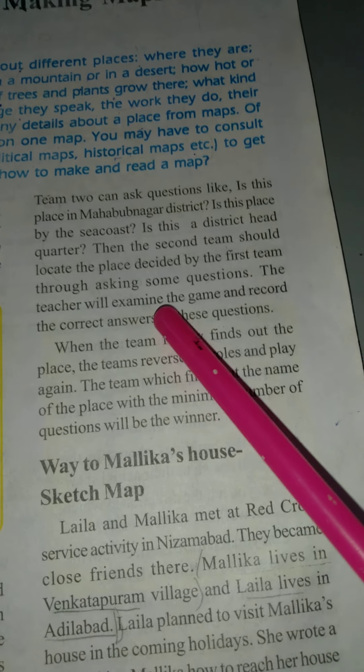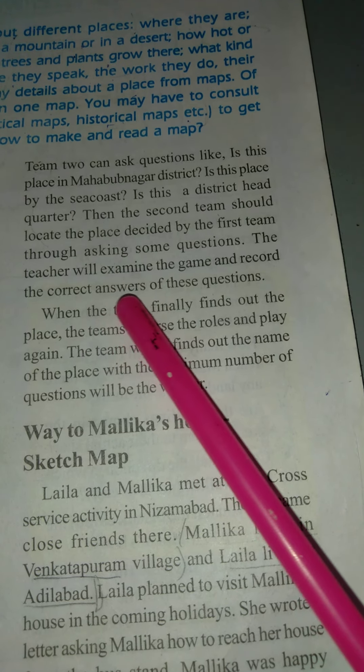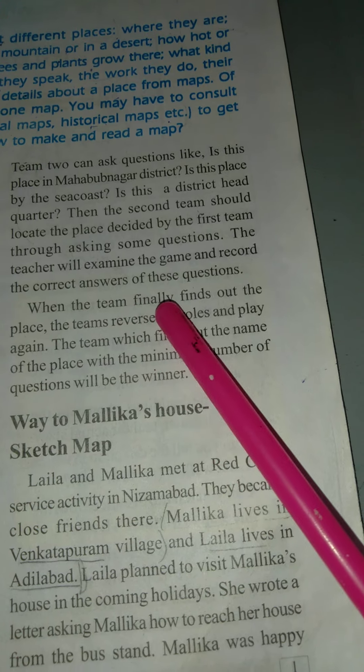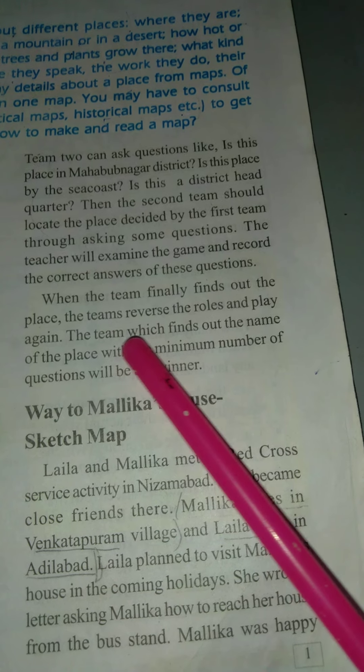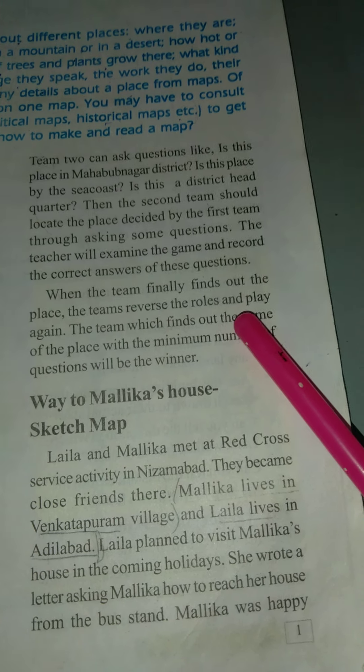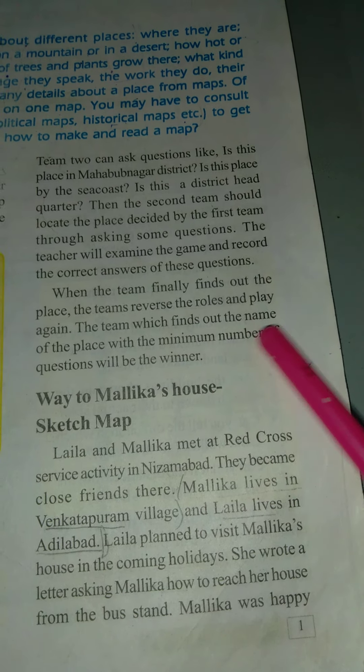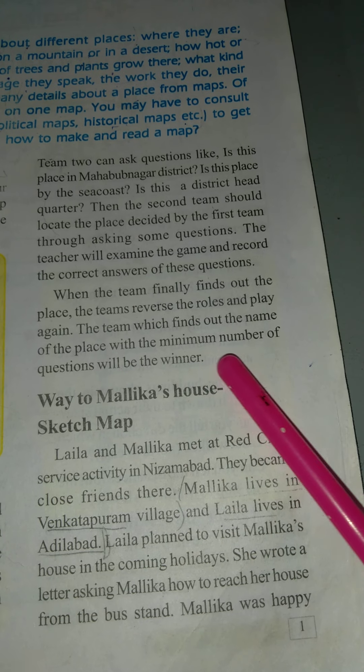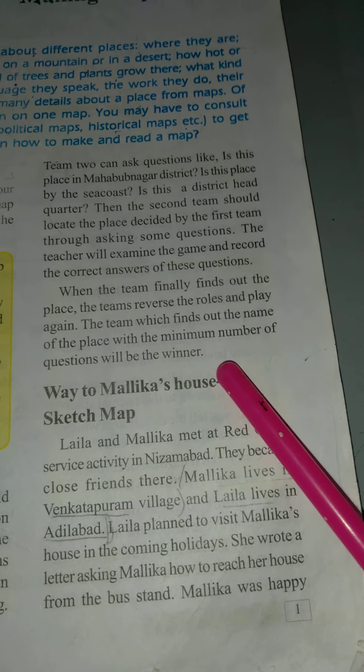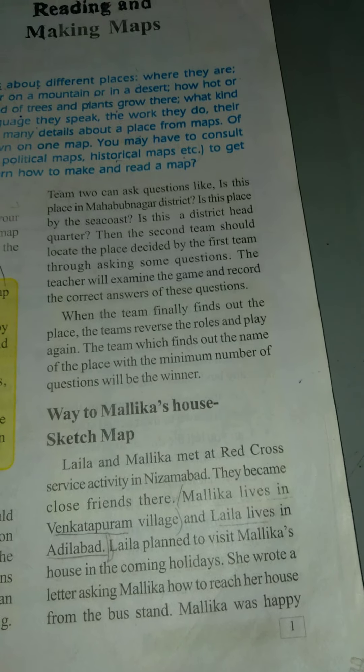The second team should locate the place decided by the first team through asking questions. The teacher will examine the game and record the correct answers. When the team finally finds the place, they reverse roles and play again. The team which finds out the name of the place with the minimum number of questions will be the winner.